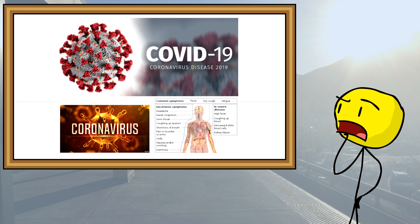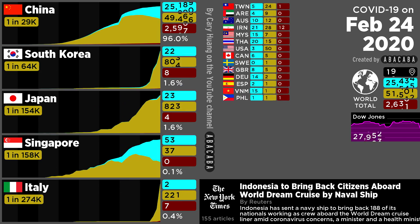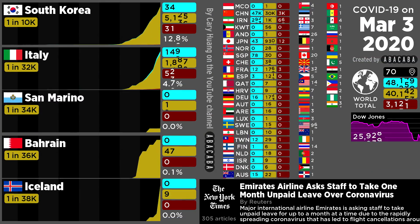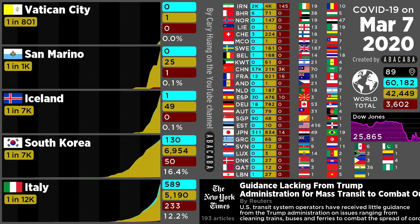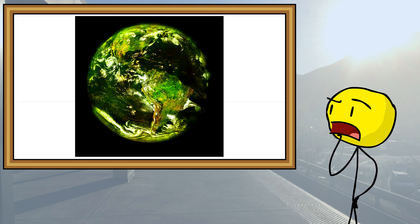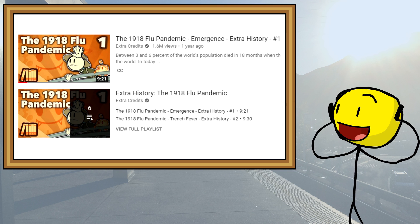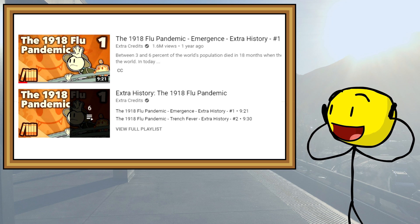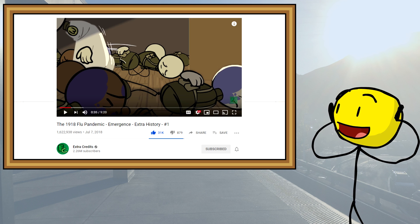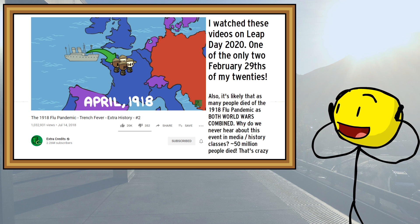Back on the topic of the epidemic, if you're wondering which country currently has the highest COVID-19 rates per capita, it's Vatican City, with one case per 801 citizens — that means one case total. If you want to learn about a time when infection rates were as high as one-third of all people on Earth, you should watch Extra Credits' video series on the 1918 flu pandemic. It's over an hour long, very well made, and can teach us lessons on what to do and what not to do this time around.